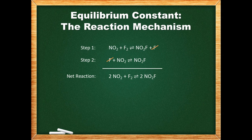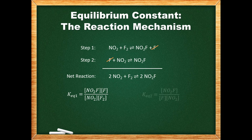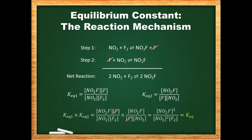The equilibrium law is valid for both single-step equilibria and multi-step equilibria. If a reaction is at equilibrium, then step 1 must be at equilibrium to maintain the reactants at a constant concentration, and step 2 must be at equilibrium to maintain the products at a constant concentration. The equilibrium expression for the overall reaction can be derived from the equilibrium expressions for each individual step by multiplying them together.